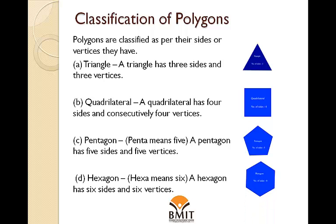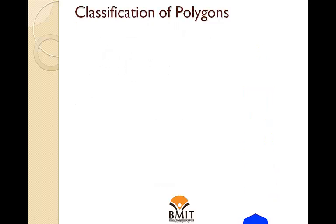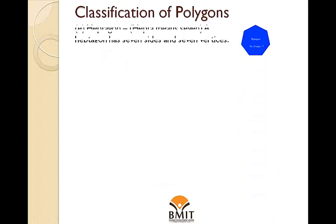Hexagon: hexa means six. A hexagon has six sides and six vertices. Heptagon: hepta means seven. A heptagon has seven sides and seven vertices.